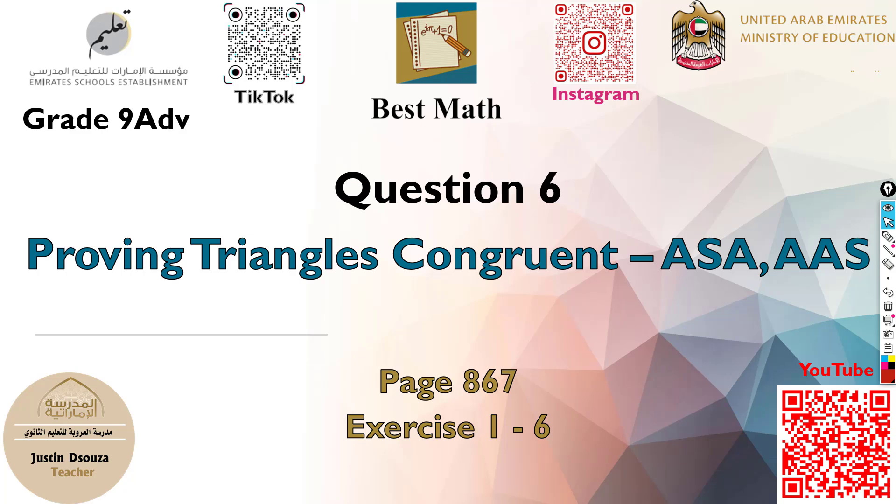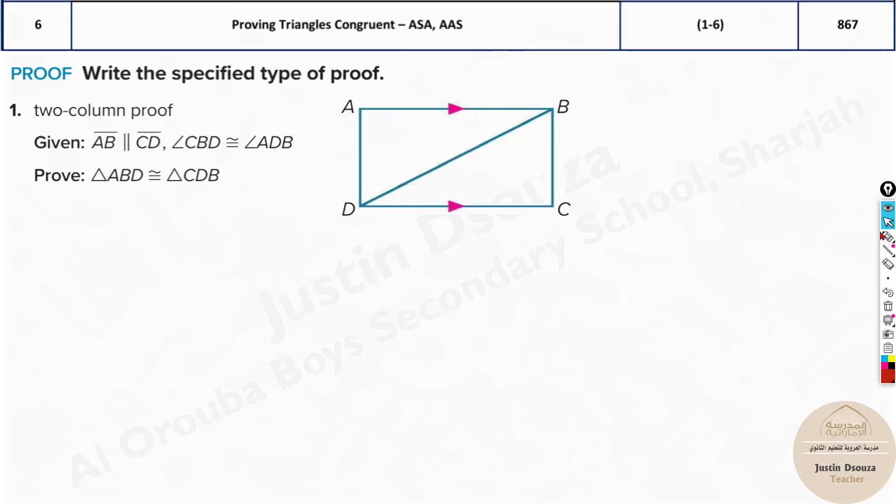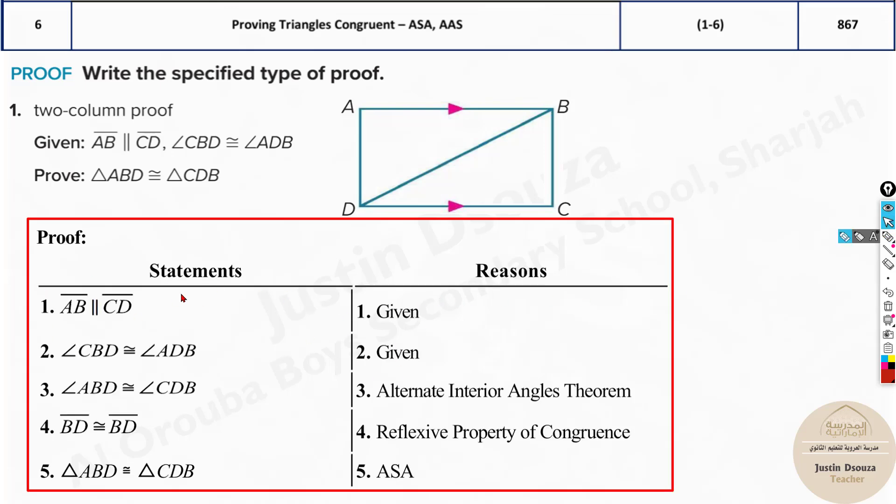The sixth question is proving triangles congruent with ASA and AAS, that is angle-side-angle and angle-angle-side. We've done similar problems in the writing part. Since this is in the MCQ part, they just ask you which congruent theorem is used, because they can't ask you the details. What they might ask is which congruency is used.